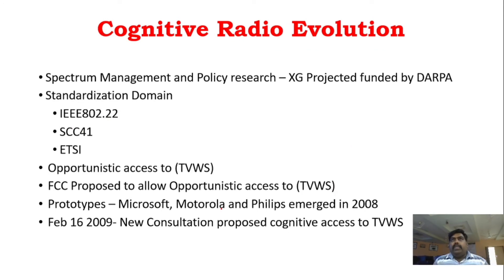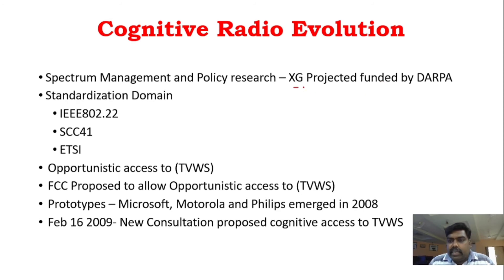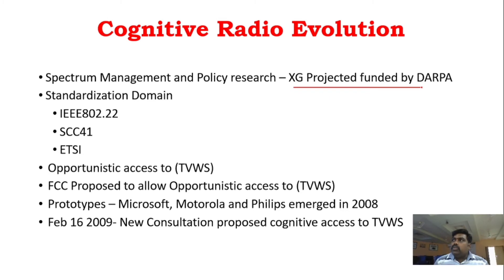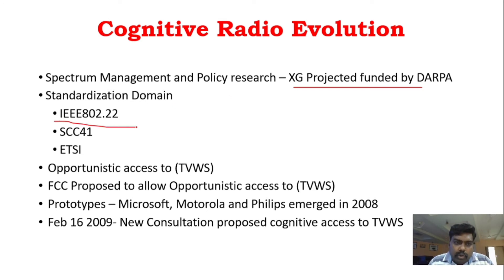Looking at dynamic spectrum access, the major important policy was the SG project funded by DARPA. They gave spectrum management and finalized dynamic spectrum access. The primary user will be assisted by a secondary user through a reconfiguration process. There are three standardized domains — three work groups: the IEEE 802.22 standard, the SCC-41 standard, and the ETSI standard.